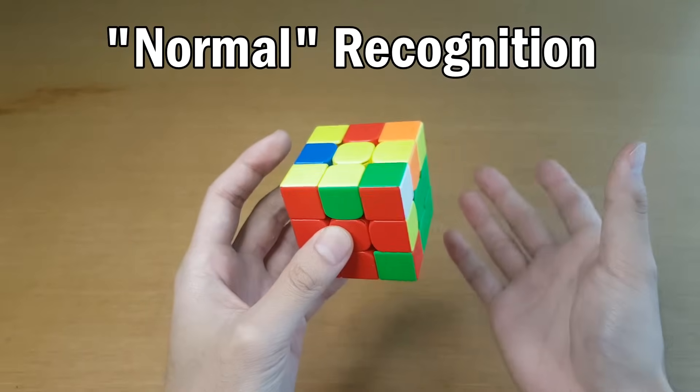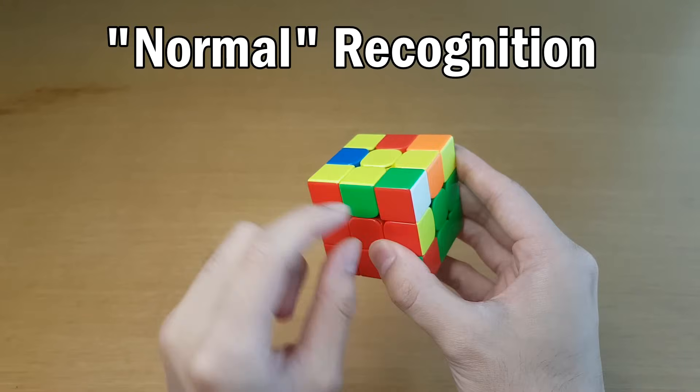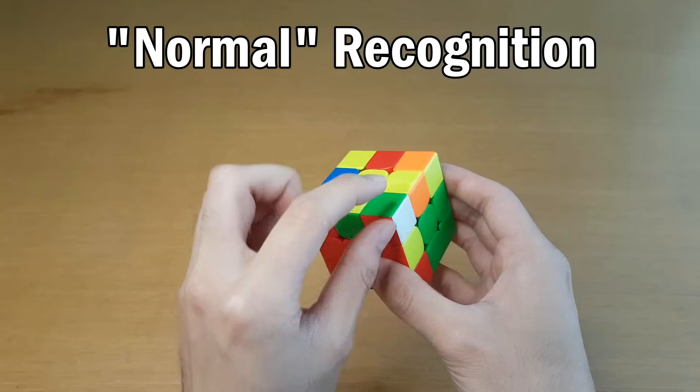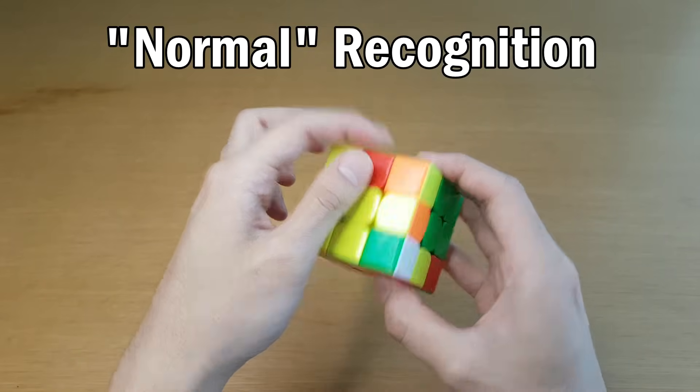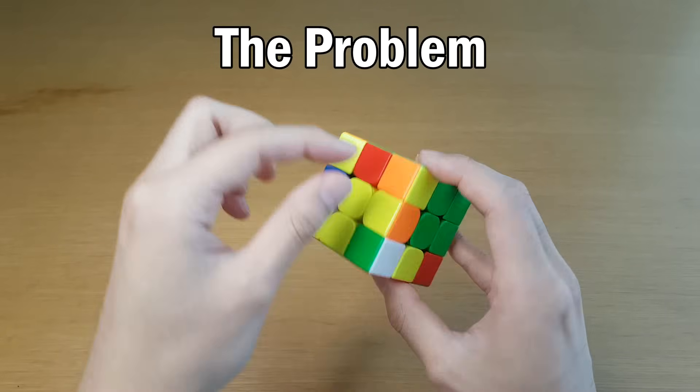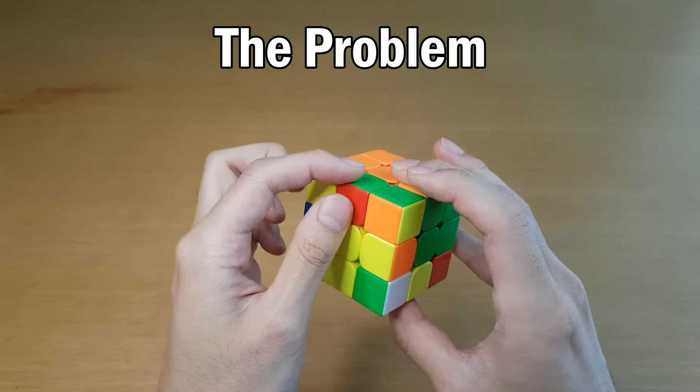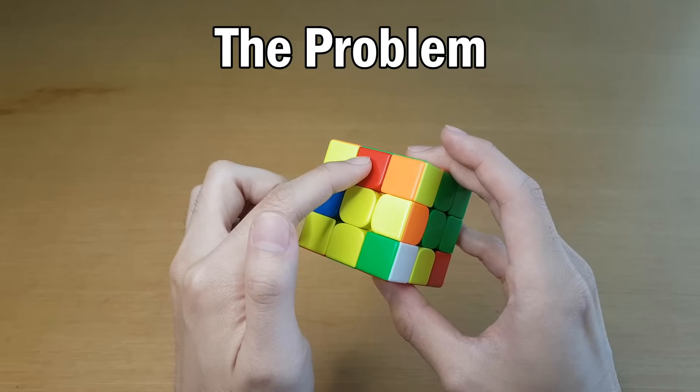So how do people normally recognize? Well, usually for F2L pairs, what you do is you find one color on the corner and match it to one color on the edge. You are comparing corner sticker to edge sticker. And so what often happens is people have trouble recognizing this case, because you see that this is white here, and then you see the edge here, and it's red on top.